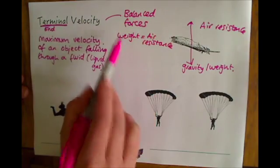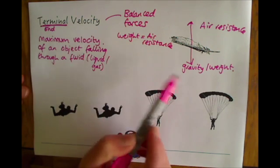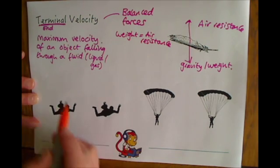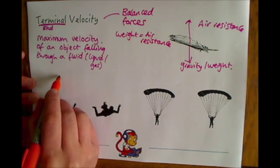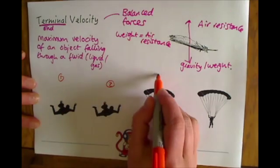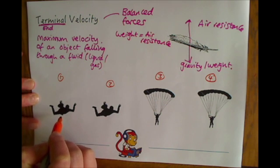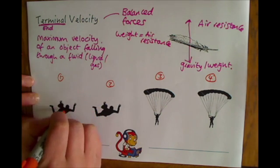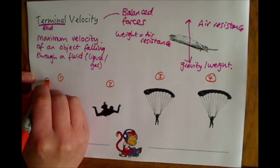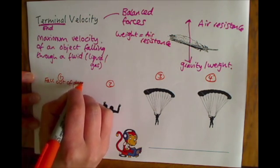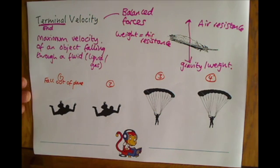Because of those balanced forces, where weight equals air resistance, the object can't speed up and accelerate anymore, and it will fall at a terminal velocity. Now let's think about this in terms of a parachute jumper. I'm going to number these stages one through to four. At stage one, I'm going to describe what happens as the parachutist falls out of the plane. So first of all, let's think about what forces are acting on the parachutist and how that affects its motion.